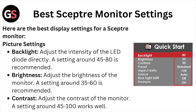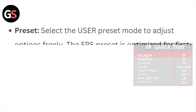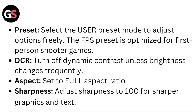Contrast: adjust the contrast of the monitor — settings around 45 to 100 work well. For preset, select the User preset mode to adjust the options freely. The FPS preset is optimized for first-person shooter games.